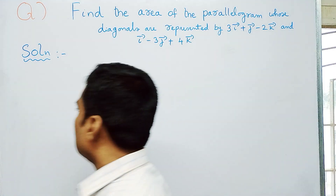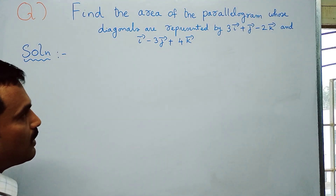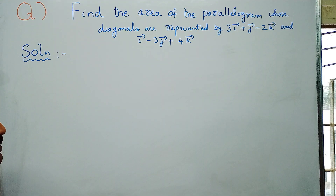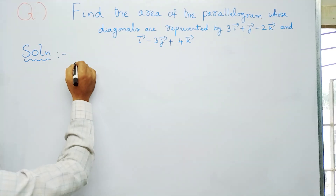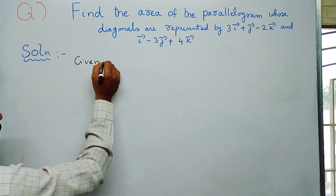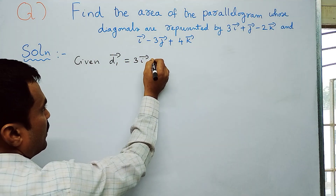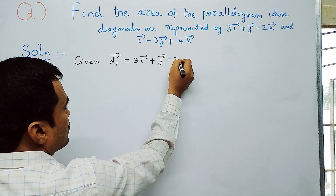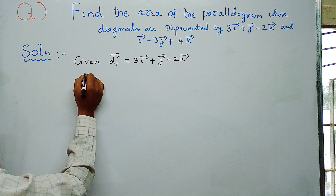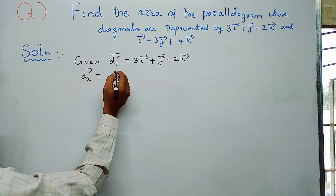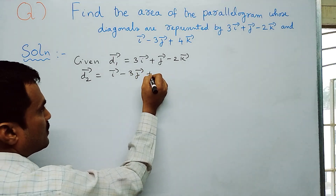Step one: write what is given. Two diagonal vectors are given, represented by d1̅ and d2̅. The first vector: d1̅ = 3i̅ + j̅ − 2k̅. The second vector: d2̅ = i̅ − 3j̅ + 4k̅.